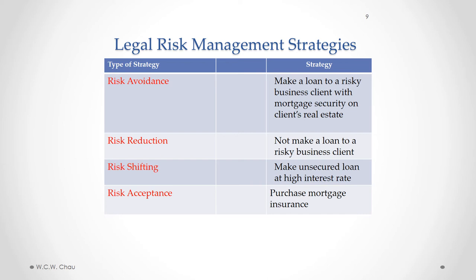In an example where a bank is considering making a loan to a customer that is a high credit risk, risk avoidance would be deciding not to make a loan to that client at all. The second strategy is called risk reduction, where the business decides to take certain steps to reduce the legal risk that has been identified.